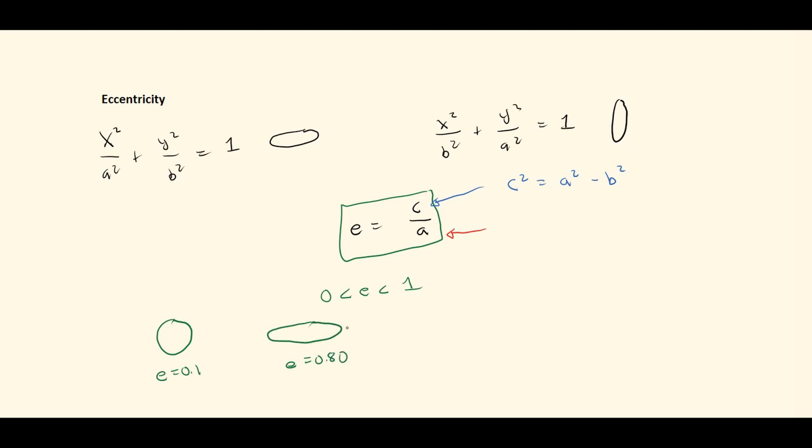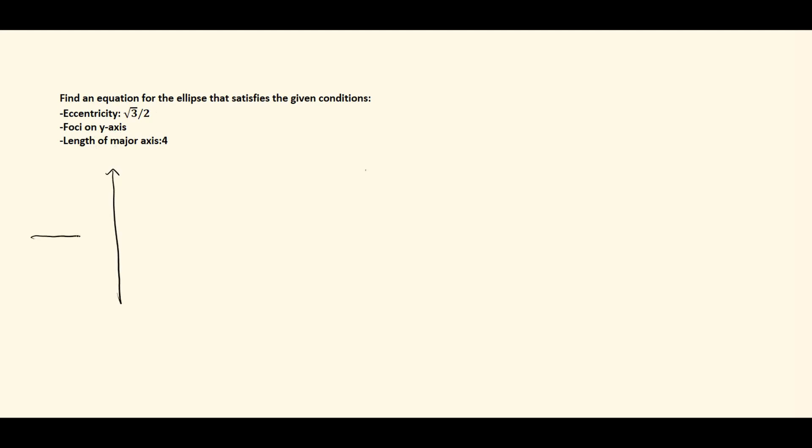Now that we've got an overview of what eccentricity is, let's go ahead and practice a problem. We're asked to find an equation for the ellipse that satisfies the given conditions: the eccentricity is the square root of three divided by two, the foci is on the y-axis, and the length of the major axis is four. Let's make a sketch.